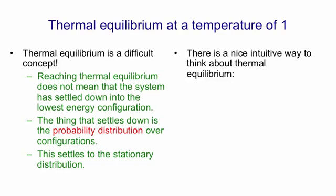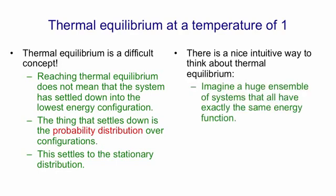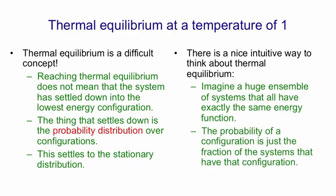A nice intuitive way to think about thermal equilibrium is to imagine a huge ensemble of identical systems that all have exactly the same energy function. Imagine a very large number of stochastic Hopfield nets all with the same weights. In that huge ensemble we can define the probability of a configuration as the fraction of the systems that are in that configuration.